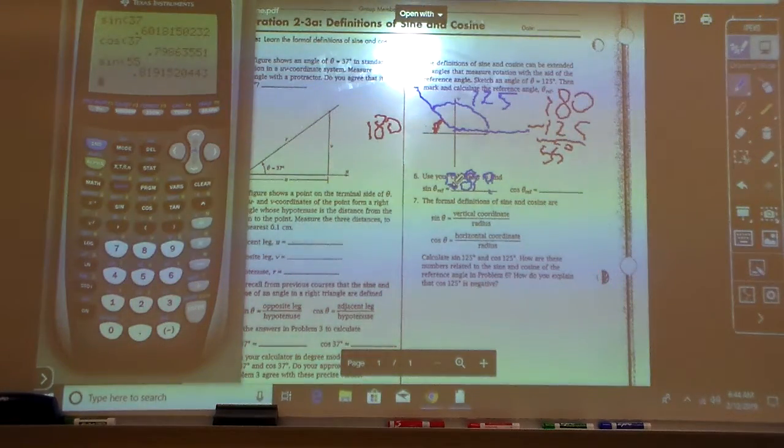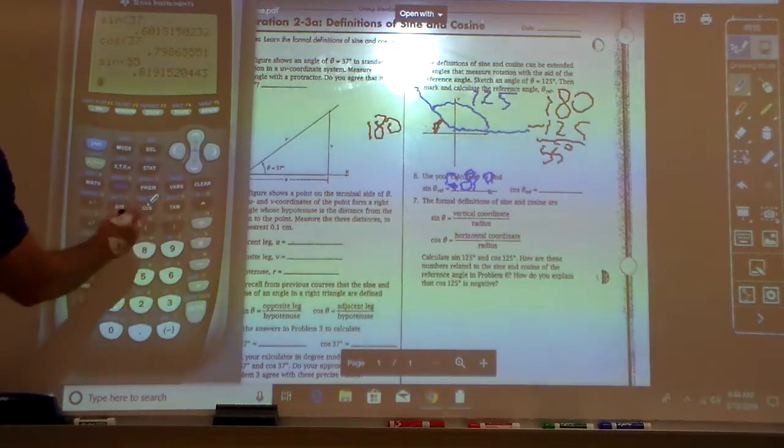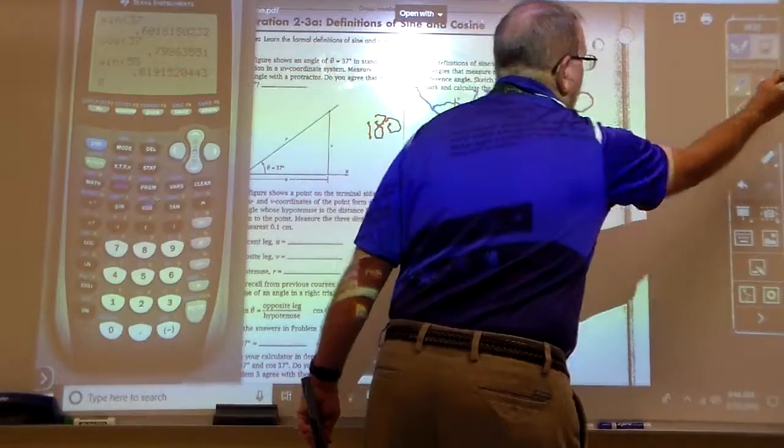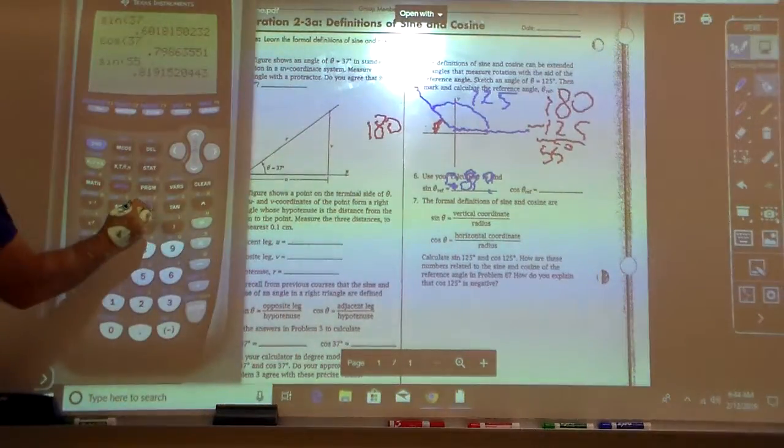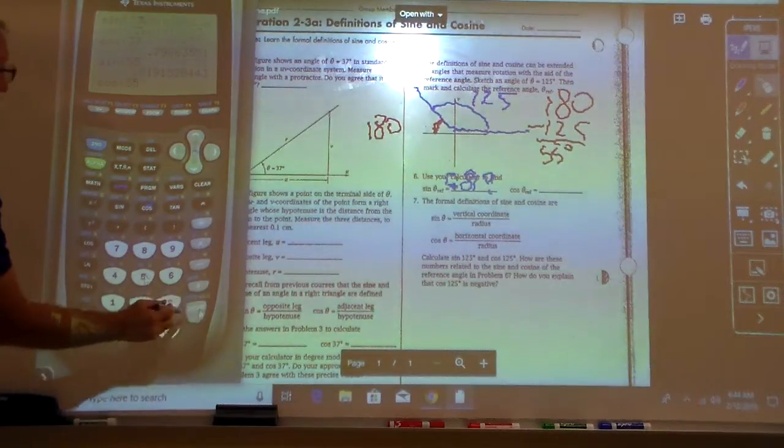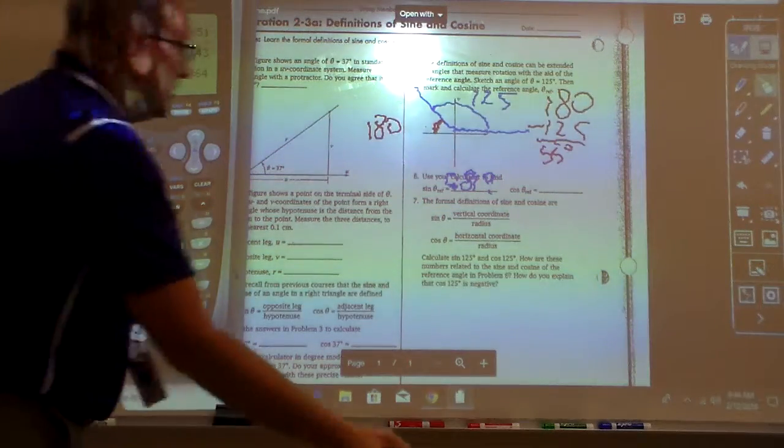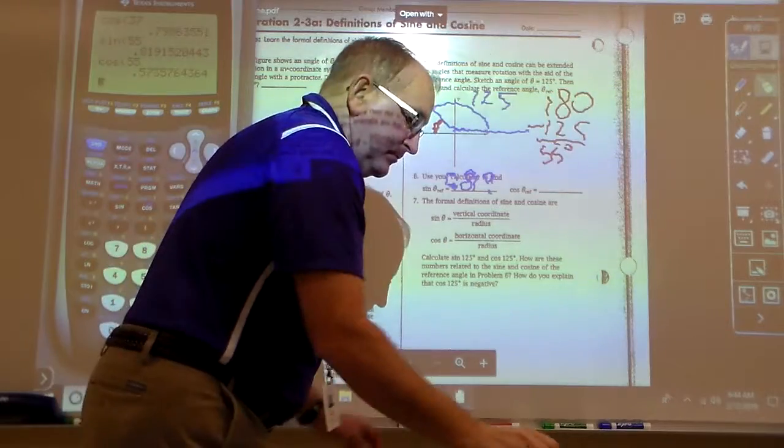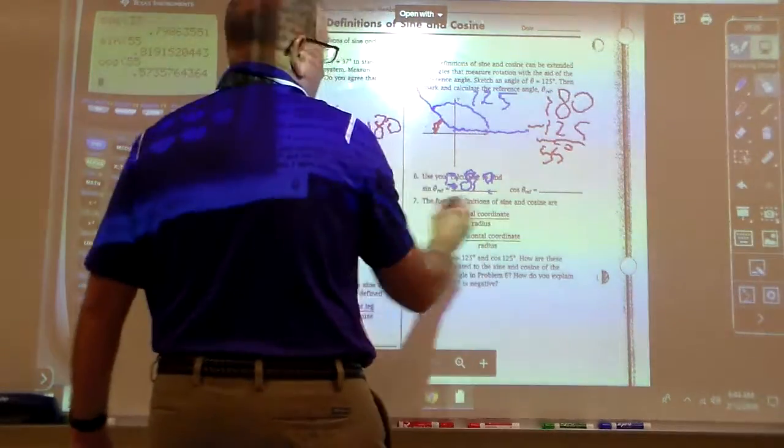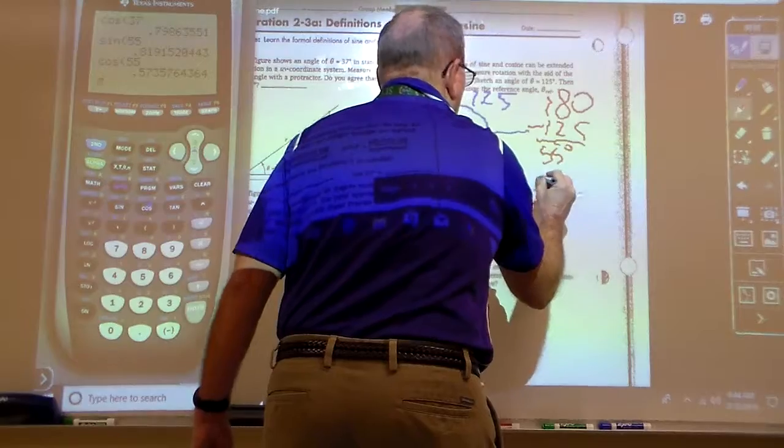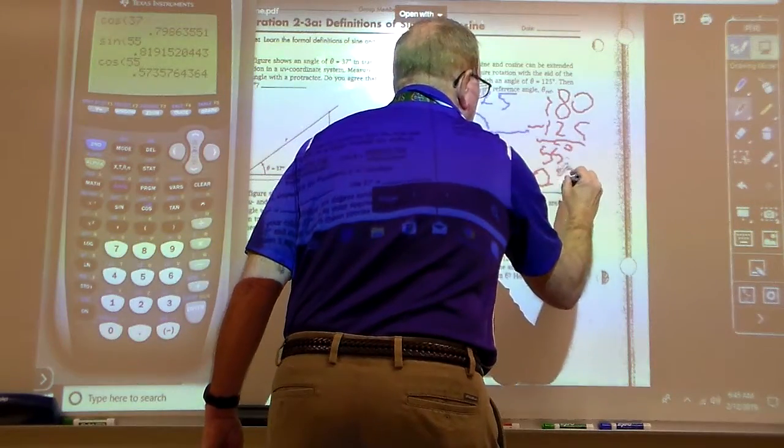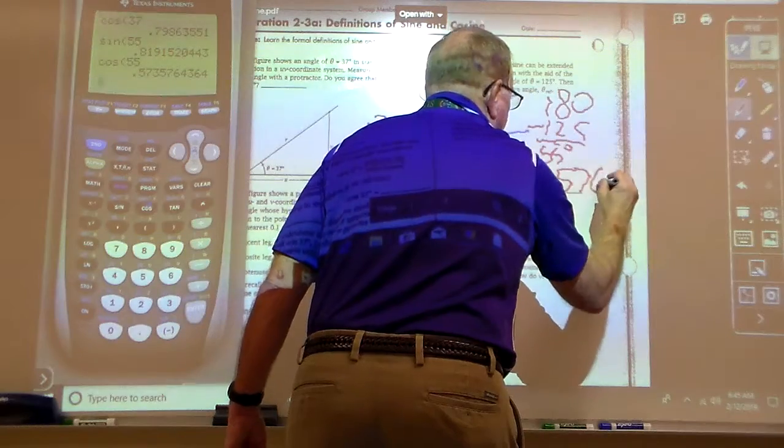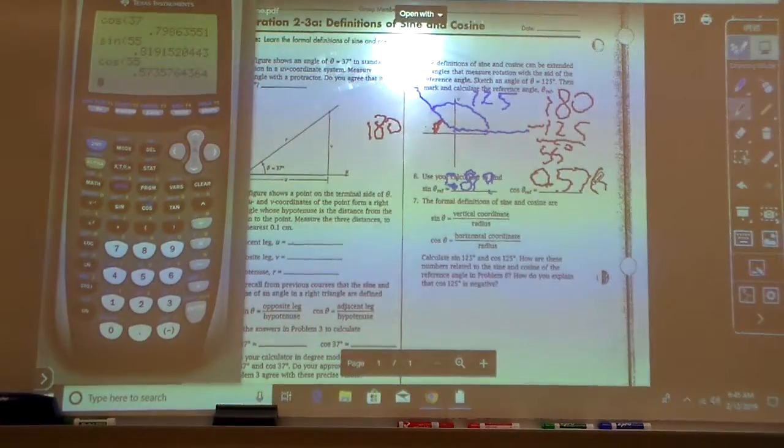And then next, we'll do the following, we'll do cosine of 55, enter, and let's just go to this right here, and we'll call that, it says 0.57. We'll call that 0.57, and we'll round it to 6.